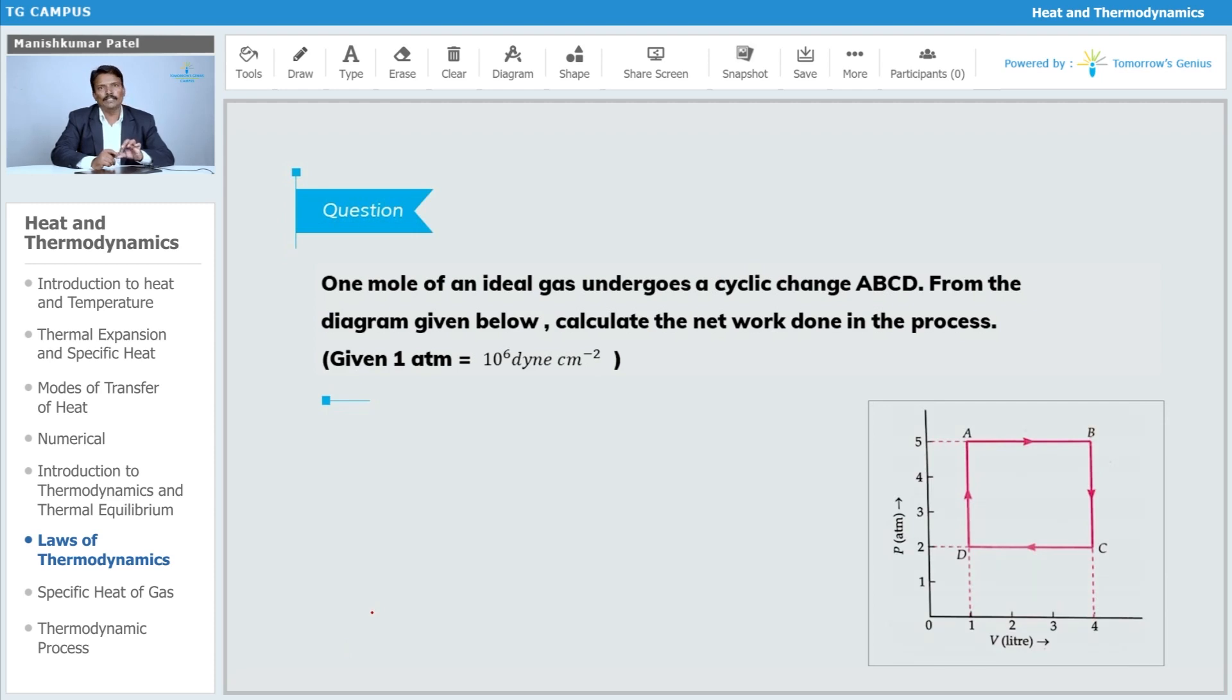you have to find the area under that graph. This area of ABCD is a square, so we can simply say that is your work done. I can write it down: this is 4 minus 1, that is 3 liters,